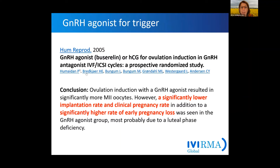This was one of the first studies using the GnRH agonist. It was shown that there is a significantly lower chance of pregnancy after a GnRH agonist trigger with a standard luteal phase support given as vaginal progesterone only.